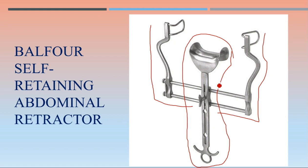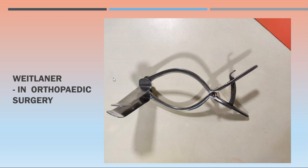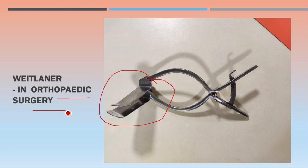If you see just the blade alone, don't be confused — it is the blade part of the Balfour self-retaining abdominal retractor. Then the Weitlaner self-retaining retractor — it has long blades and is commonly used in orthopedic surgery for retracting tissues. Force can be applied and you can see the lock system.